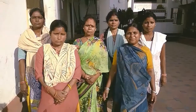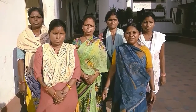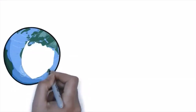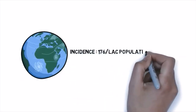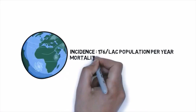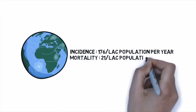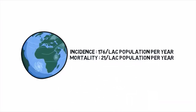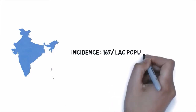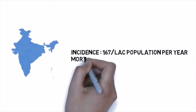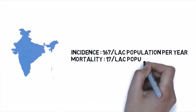Under the Global TB Report 2015, global incidence of TB marked 96 million with an incidence of 176 per lakh population per year and a mortality of 21 per lakh population per year. In India, the incidence was 167 per lakh population per year and a mortality of 17 per lakh population per year.